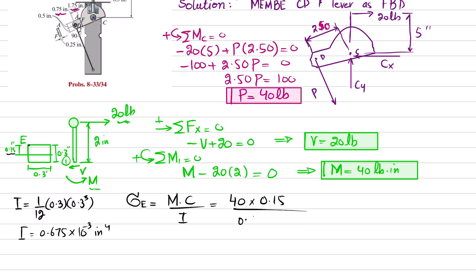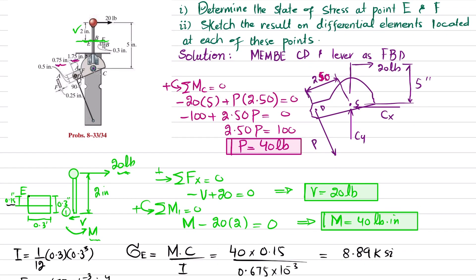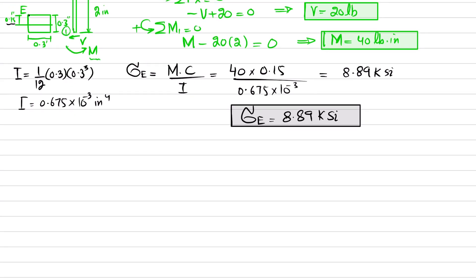The bending stress at point E is σ_E equals M times c divided by I, where M equals 40, c equals 0.15, and I equals 0.675 times 10⁻³. Solving gives σ_E equals 8.89 ksi. Since point E is at the top and the beam bends such that the top is in tension, this stress is a tensile stress.